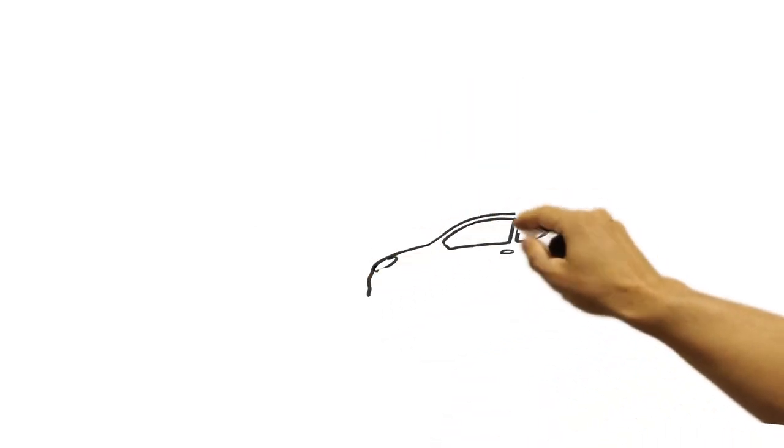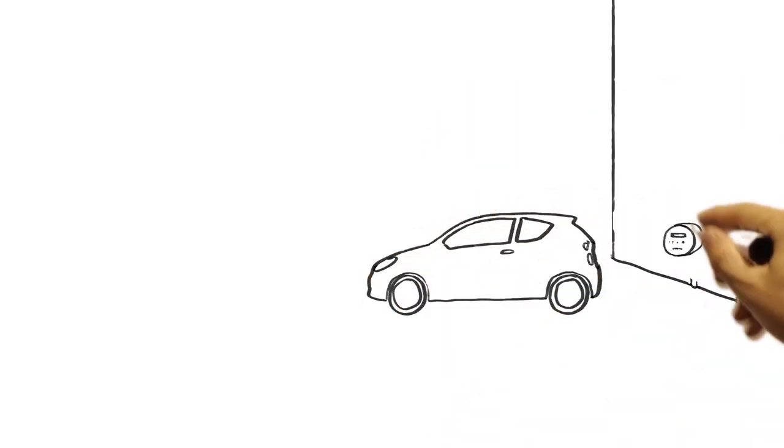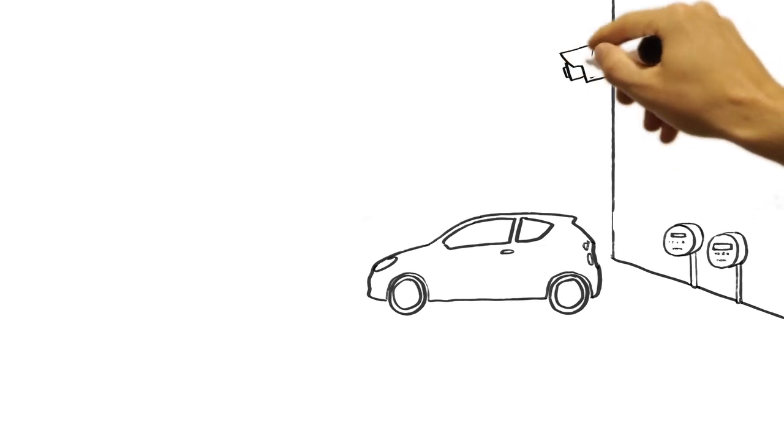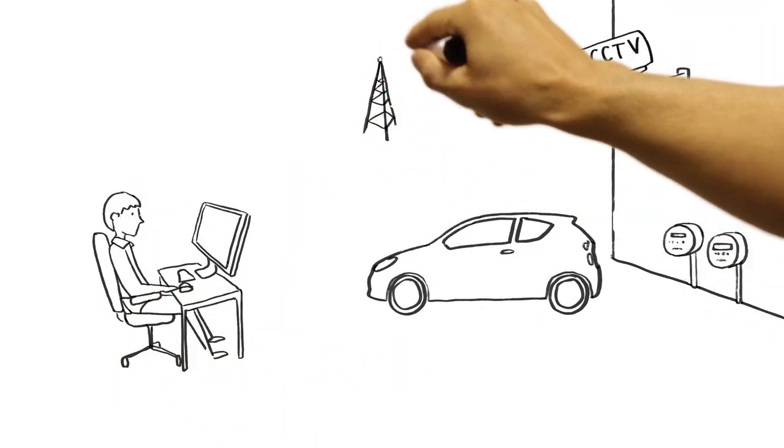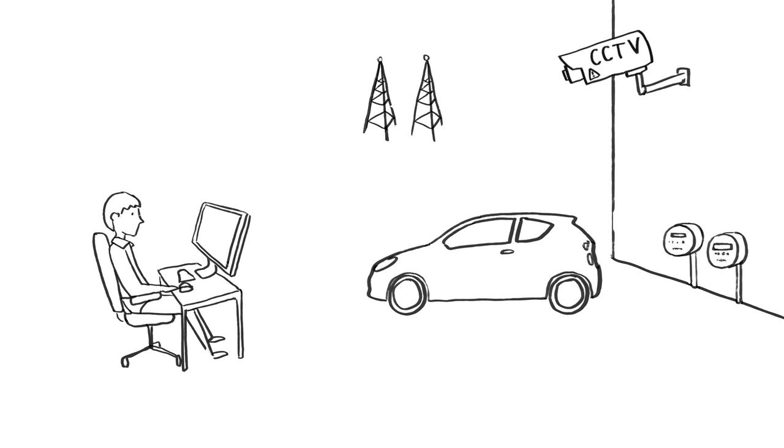Everything we interact with will one day be connected. From automobiles to smart meters to security cameras. M2M technology is what powers the Internet of Things by enabling any type of machine or system to connect over wireless networks.